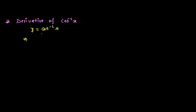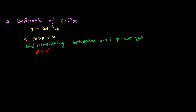Since it is inverse, when it goes to the left-hand side it will be cos y equals x. Since our trig ratio cos has angle y, we need to differentiate both sides with respect to y. Differentiating both sides with respect to y: the derivative of cos y with respect to y equals the derivative of x with respect to y. The derivative of cos y is minus sine y, and the derivative of x with respect to y is dx/dy.